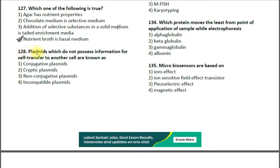Question number 128: Plasmids which do not possess information for self-transfer to another cell are known as — 1. conjugative plasmid; 2. cryptic plasmid; 3. non-conjugative plasmid; 4. incompatible plasmid. The correct answer is option 3 — non-conjugative plasmids.